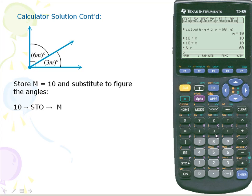And for our next angle 3 times m, which gives us 30. So our 2 angle measures are 60 and 30.